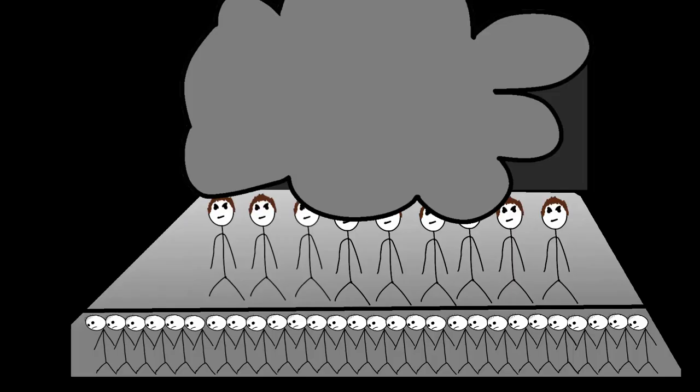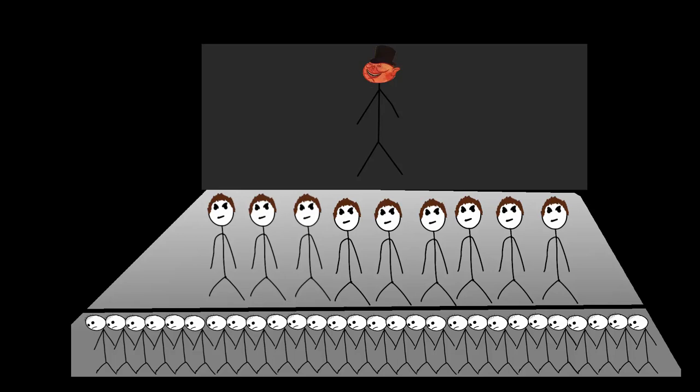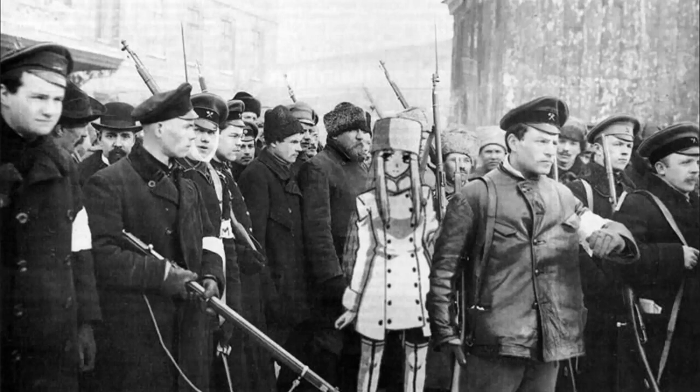So there was a revolution. But that one didn't change anything, so there was another revolution. It was led by a man named Lenin and his Bolshevik party. They stormed the government buildings and proclaimed the Soviet Union. Then they fought a civil war against the troops that were loyal to the tsar, and then they had achieved true socialism.